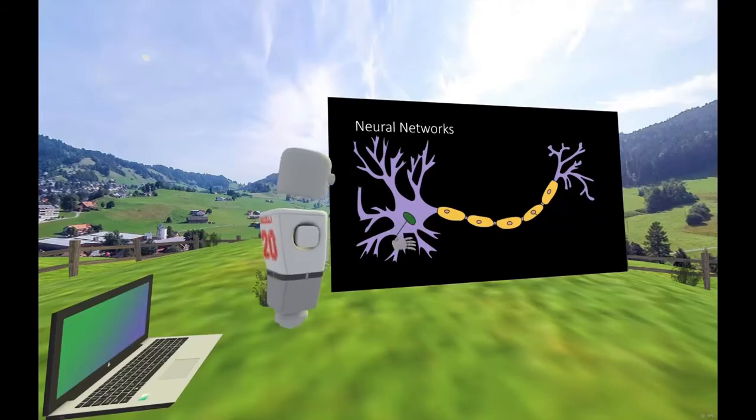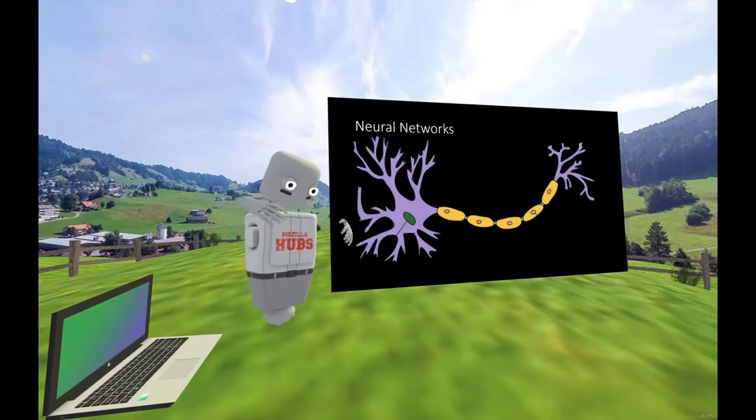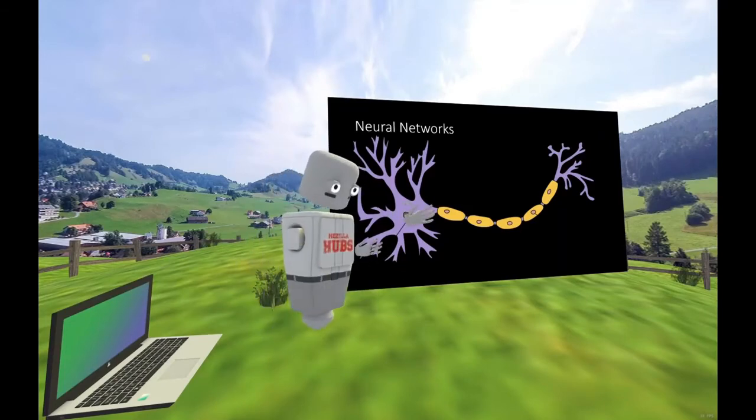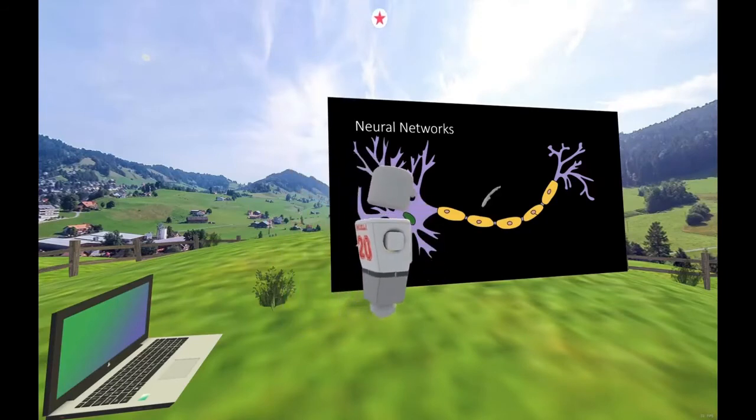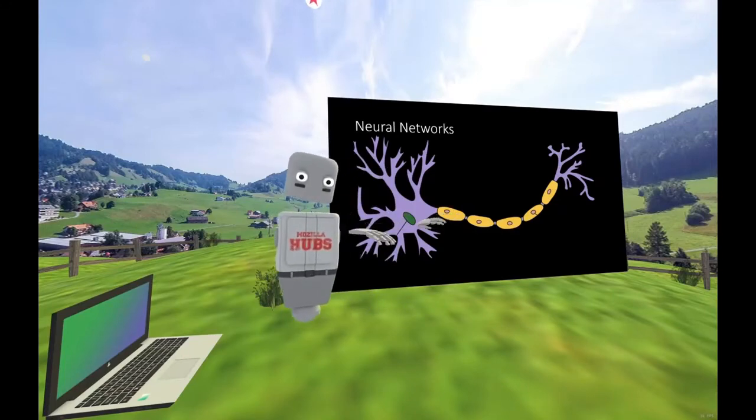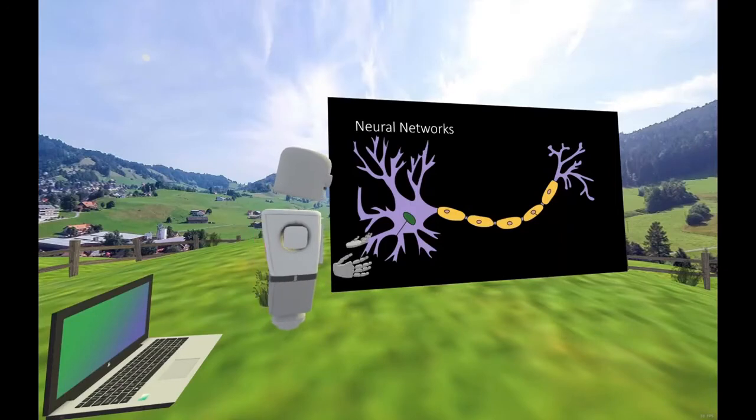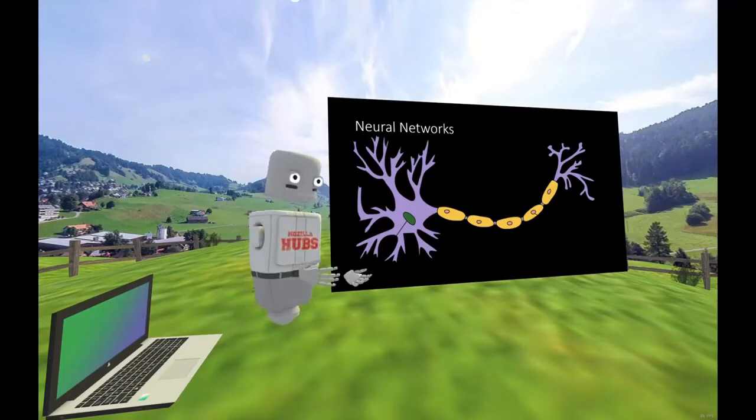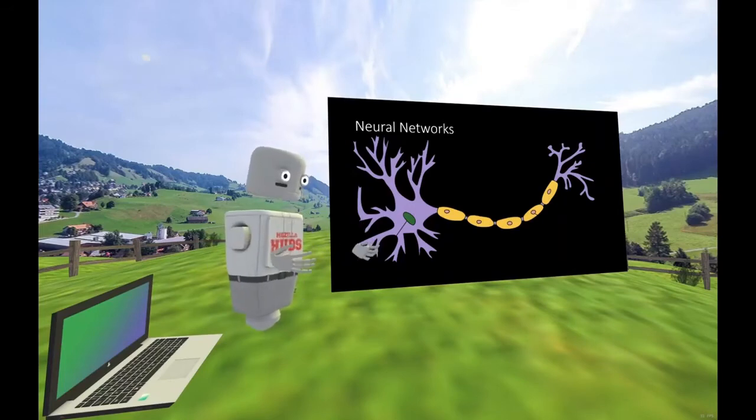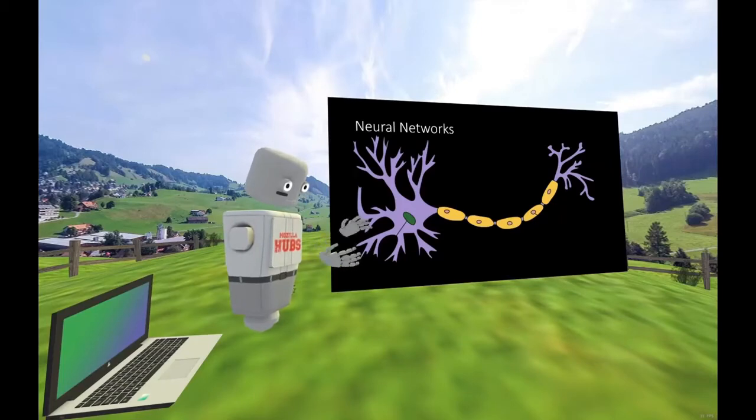So here we have our dendrites. Our dendrites are the terminals that take input from their surroundings, take input from other neurons. And then that signal, those signals rather, get processed in some way and then manipulated in a single signal is sent out through the axon to the terminals and then distributed to other neurons surrounding. So this is actually very similar to how things like logic gates work. For those of you who may have some electrical engineering background or basic computer science background, you may be familiar with the concept of logic gates.